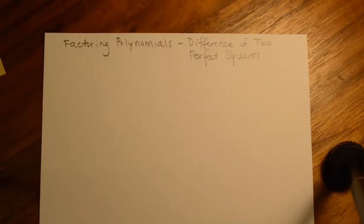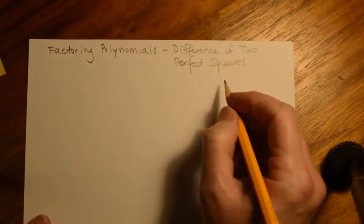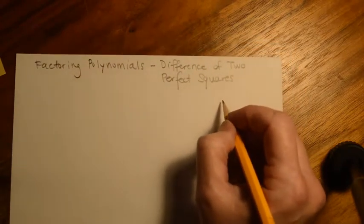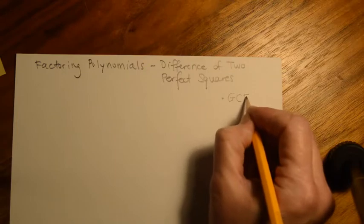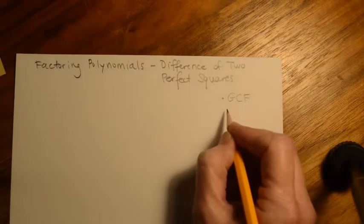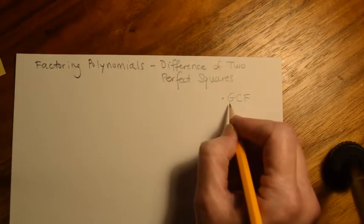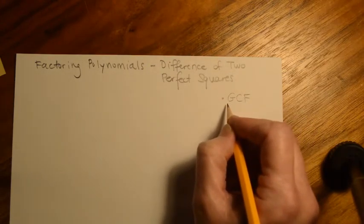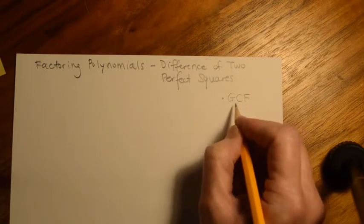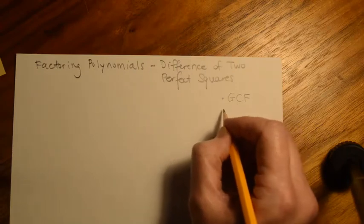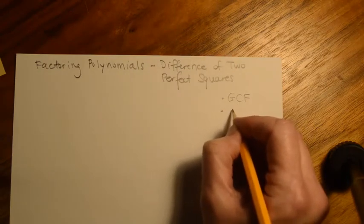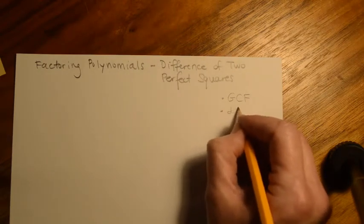I want to take a look at another type of factoring. If you remember from the last video, there are five types we're going to talk about in this chapter. The first one we did already is GCF factoring, and this really is for any type of polynomial we come across — there's no special requirements for that. Then the next one is Difference of Squares.